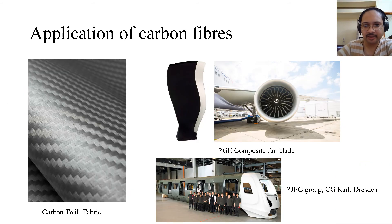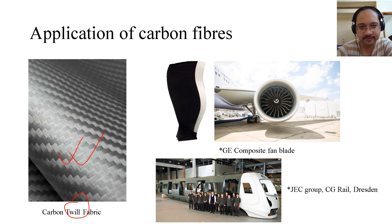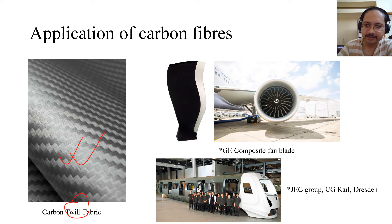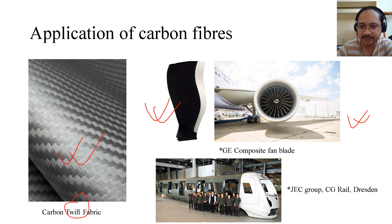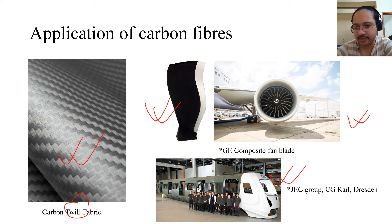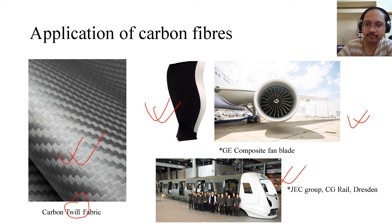Typical applications include carbon twill-weave fabric, a GE composite fan blade, and a JCCG rail where the compartments are made of carbon fiber composites. Please look into the description links for much more detail on these products.